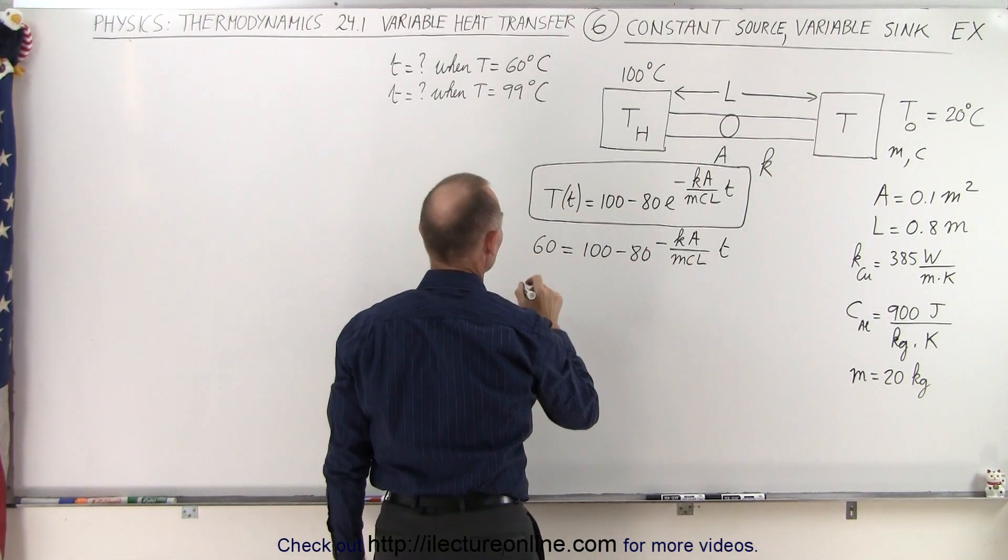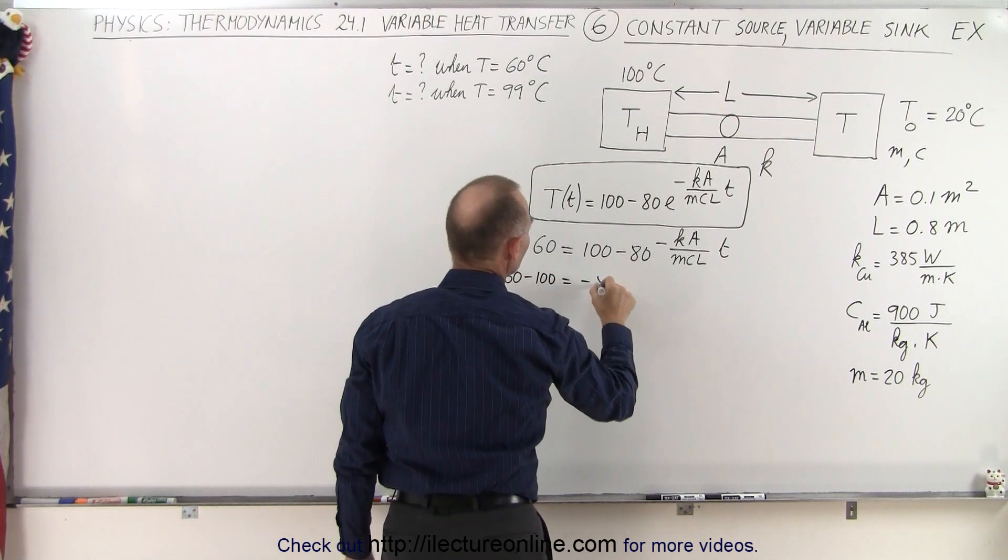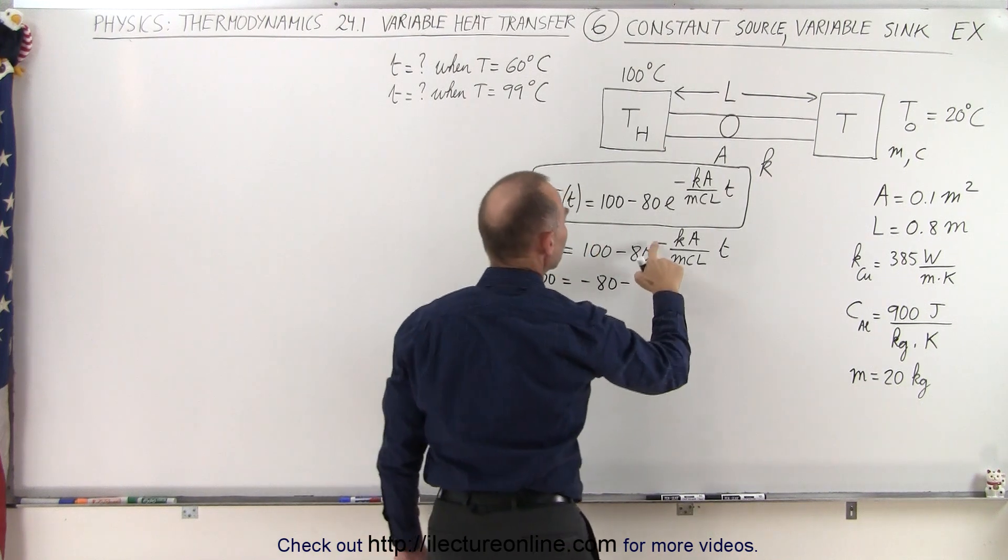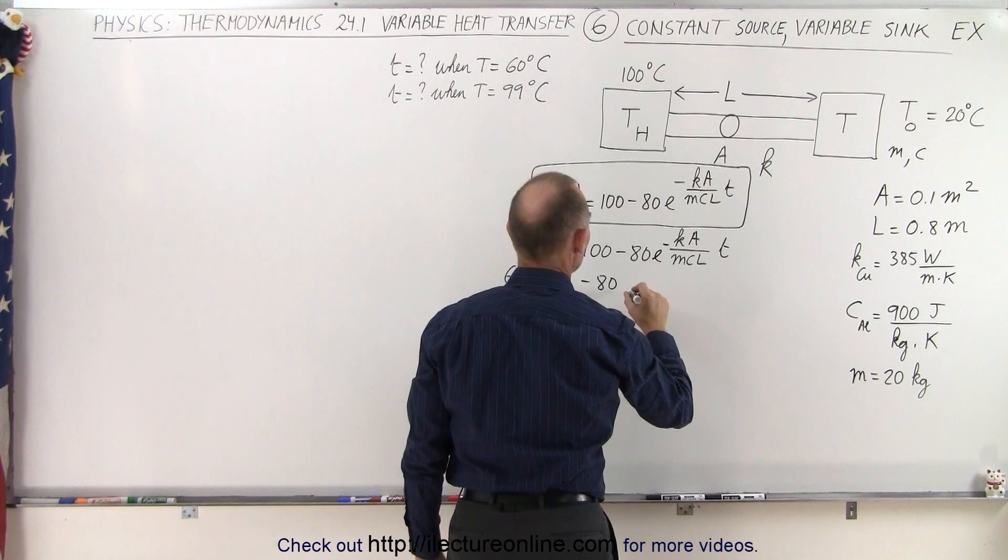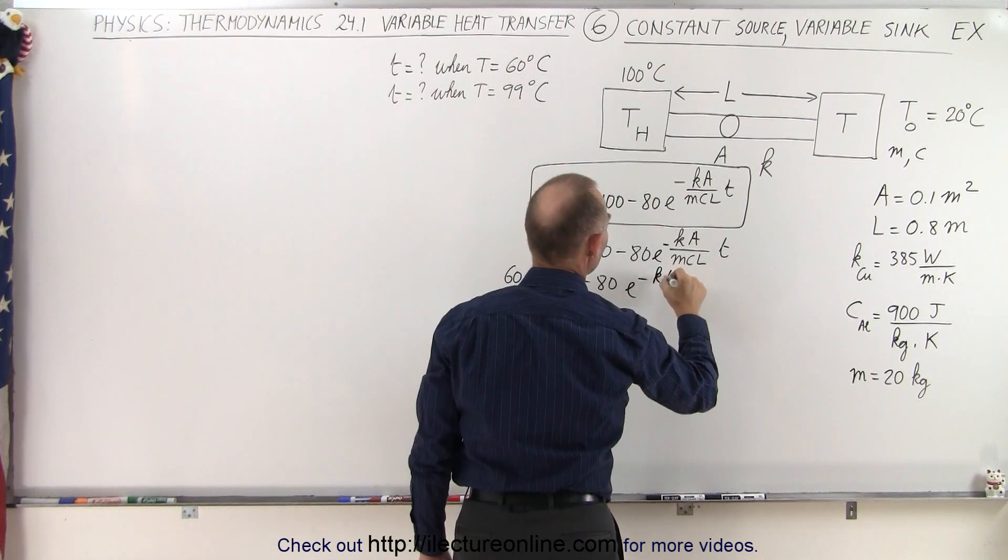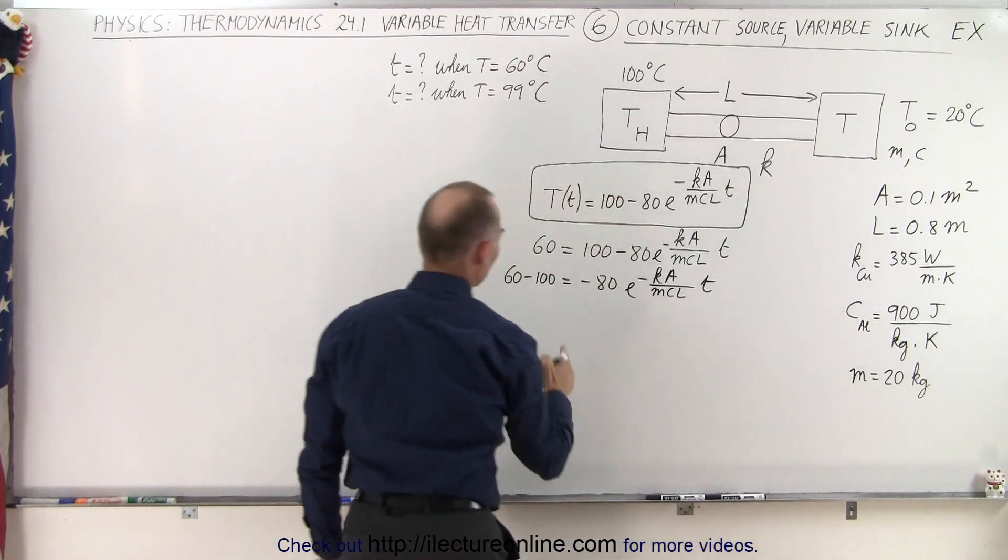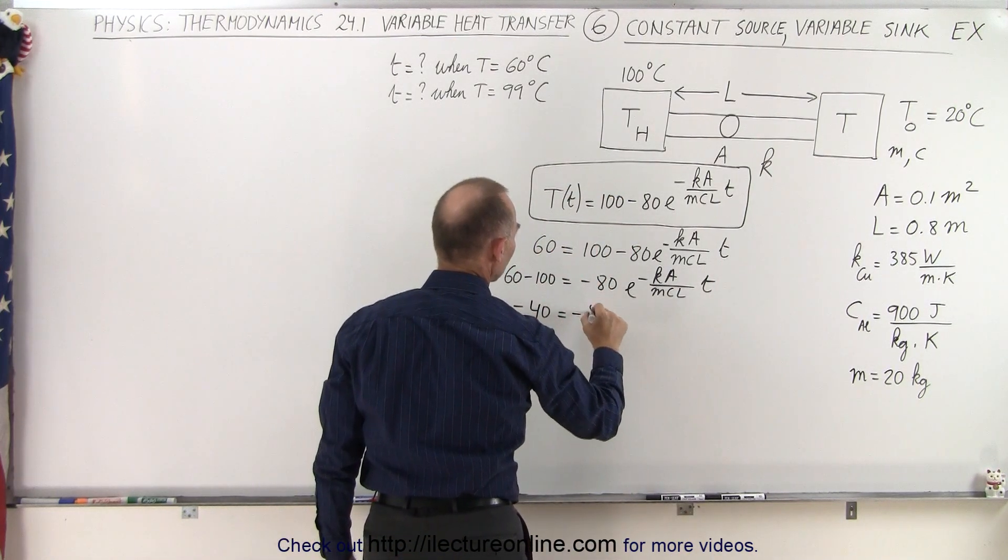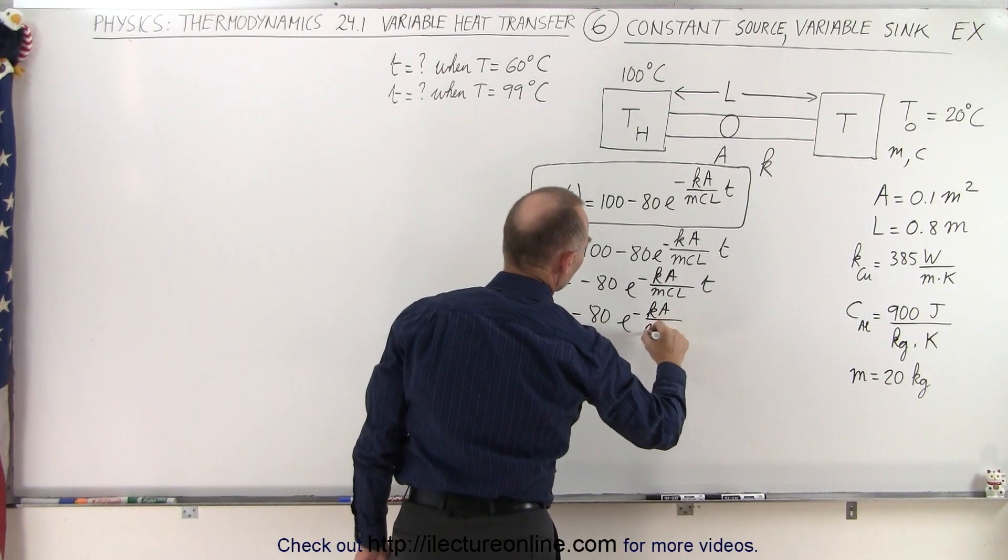First we'll bring the 100 to the other side so we get 60 minus 100 equals minus 80 times—oh I'm forgetting my E here—E to the minus that, so that would be E to the minus KA over MCL times T. So on the left side we end up with minus 40 equals minus 80 E to the minus KA over MCL times T.